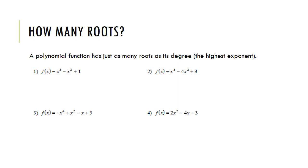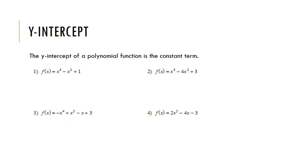A polynomial function has just as many roots as its degree, or the highest exponent. Looking at the first example, the highest exponent is 3, which means that this function has three roots in total. Looking at the second example, the highest exponent is again 3, so this function has 3 roots. Looking at the third example, the highest exponent is 4, so this function has 4 roots.